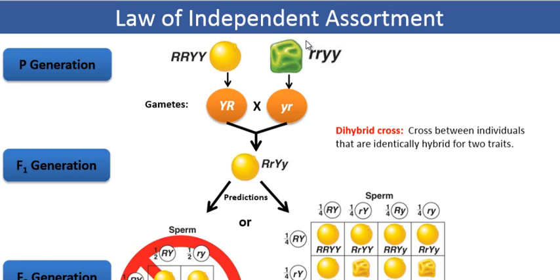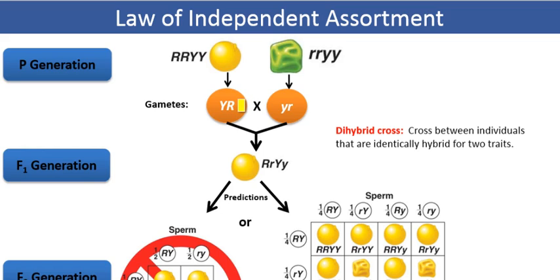During gamete formation — during the formation of eggs and sperm, or pollen in this case — pure-breeding parental lines can each only produce identical gametes, which carry alleles for either the dominant or the recessive phenotype respectively. The parental line that has yellow and round seeds will only produce gametes that have those dominant alleles: the dominant allele for seed color, which is the yellow allele, and the dominant allele for seed shape, capital R, that produces the round seed shape.